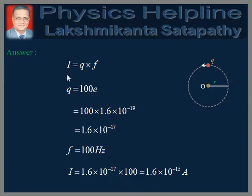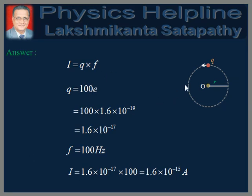Let us first understand what is meant by the equivalent current corresponding to a revolving charge. When a charge Q is revolving in a circular path with some given frequency, the equivalent current is the amount of charge crossing any point in its path in one second, which is the charge on the particle multiplied by the number of times it crosses any point — which is its frequency of rotation. Therefore we write I is equal to Q into F.